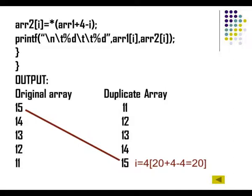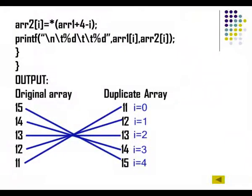By manipulating the addresses of the first array and accessing values using the pointer, I am storing whatever was in ordinary order into reverse order in the second array. When the array is displayed in each iteration, you can see the elements in reverse order. This is a straightforward logic using pointers to reverse the elements of an array and copy them into a different array with a different name. This is how pointers are used with arrays.